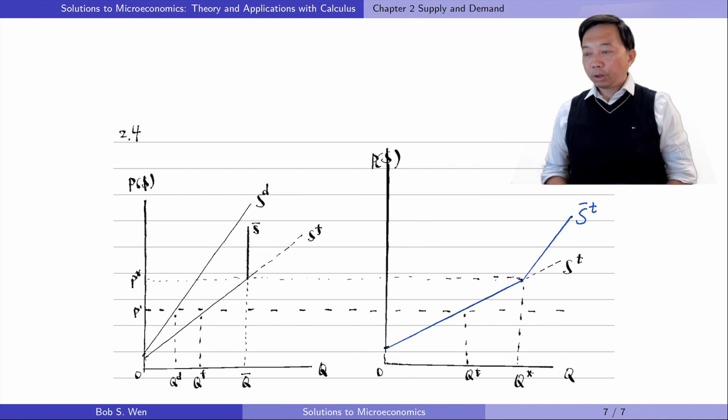First, we draw the total supply curve without the quota. It is the horizontal sum of the domestic and the foreign supply curves. For example, at price P1, the domestic supply is Qd and the foreign supply is Qf. The sum of quantities supplied at that price is Qt. Therefore, the total supply curve is St without the quota.